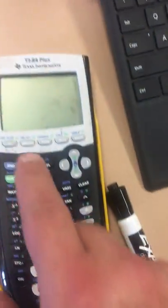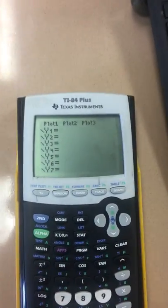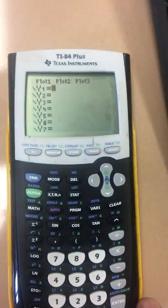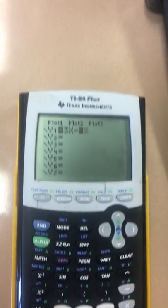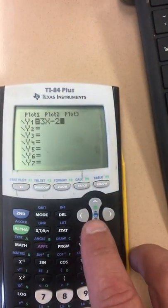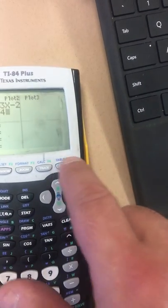So now I'm looking down at my TI-84. I'm going to go ahead in y1 and put 3x - 2. Then I'm going to go down to y2 and put in 4. And I'm going to hit graph.